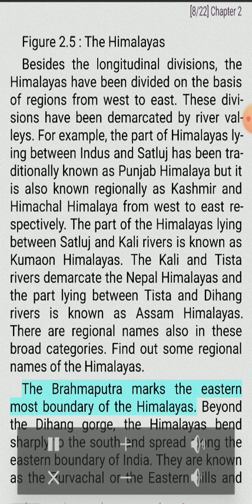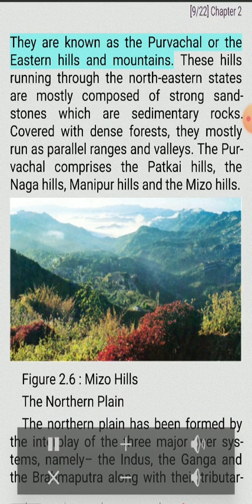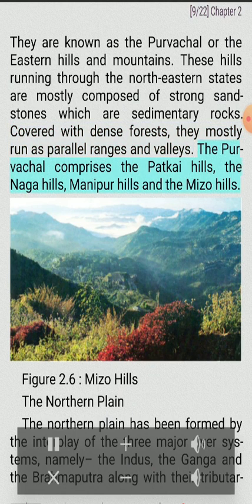The Brahmaputra marks the easternmost boundary of the Himalayas. Beyond the Dihang Gorge, the Himalayas bend sharply to the south and spread along the eastern boundary of India. They are known as the Purvanchal or the eastern hills and mountains. These hills running through the northeastern states are mostly composed of strong sandstones, which are sedimentary rocks. Covered with dense forests, they mostly run as parallel ranges and valleys. The Purvanchal comprises the Patkai Hills, the Naga Hills, the Manipur Hills and the Mizo Hills.